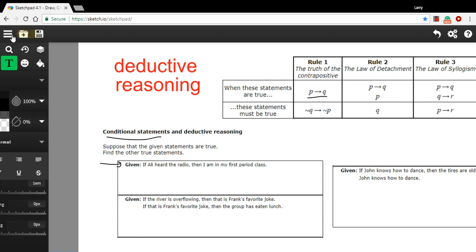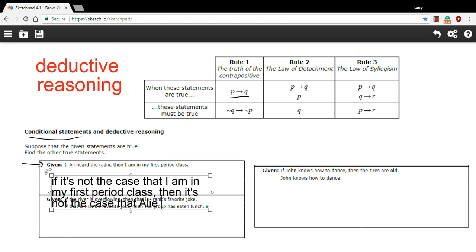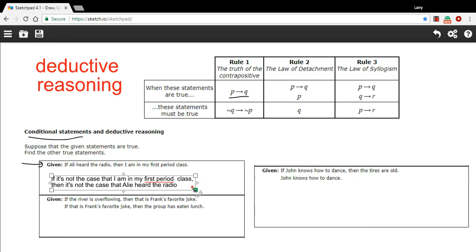So the contrapositive - we negate and switch the hypothesis with the conclusion. The conclusion here is 'I am in my first period class,' so we start with: if it's not the case that I am in my first period class, then it's not the case that Ali heard the radio. That's the contrapositive. I've switched the hypothesis with the conclusion and negated both. If the first statement is true, then the contrapositive also has to be true.